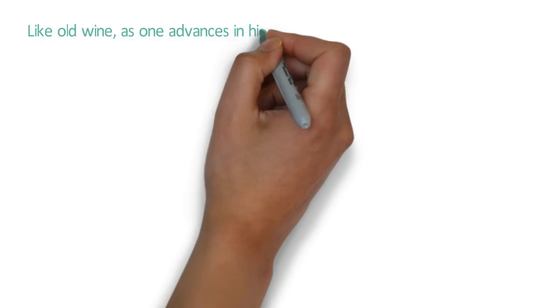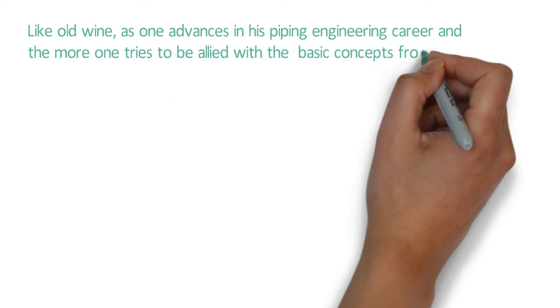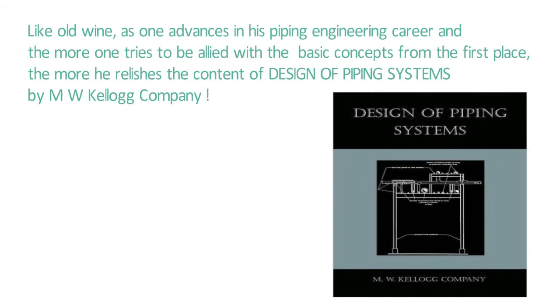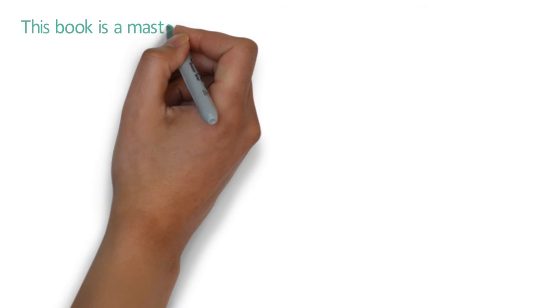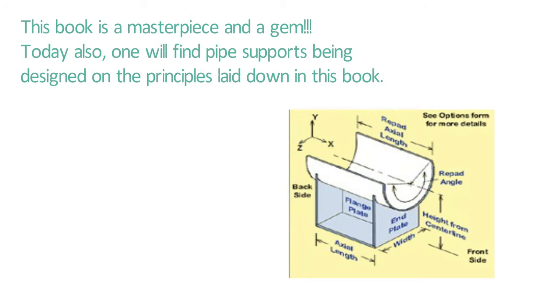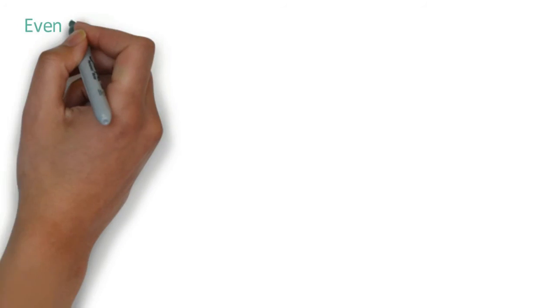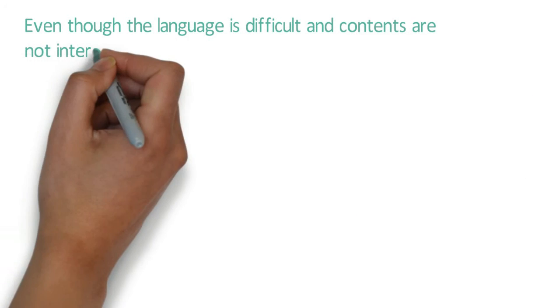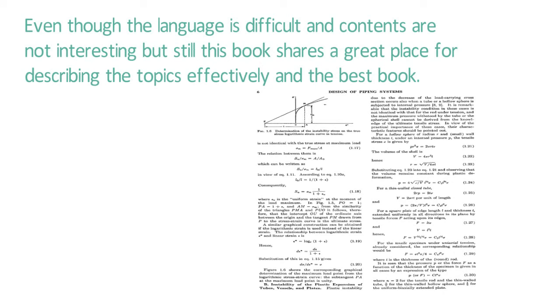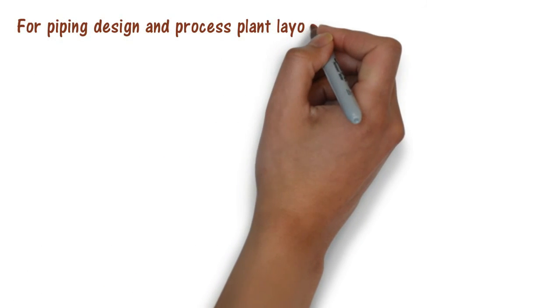Like old wine, as one advances in his piping engineering career and the more one tries to be allied with the basic concepts from the first place, the more he realizes the content of the Design of Piping Systems by M.W. Kellogg Company. So this book is a masterpiece and a gem in fact. Today also one will find pipe support being designed on the principles laid down in this book. Even though the language is difficult and contents are not so interesting, but still this book shares a great place for describing the topics effectively and perhaps the best book.